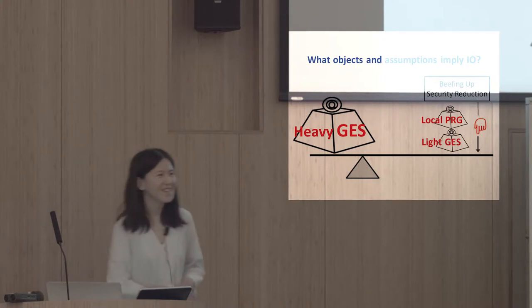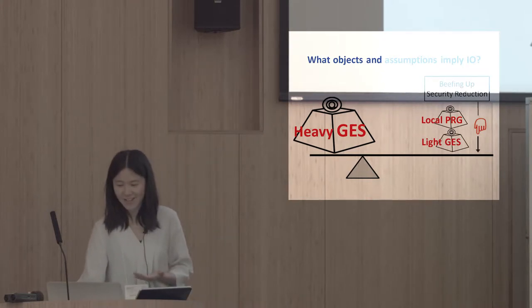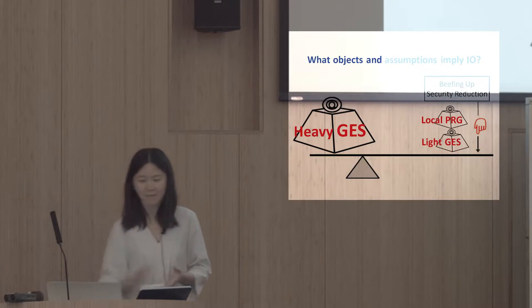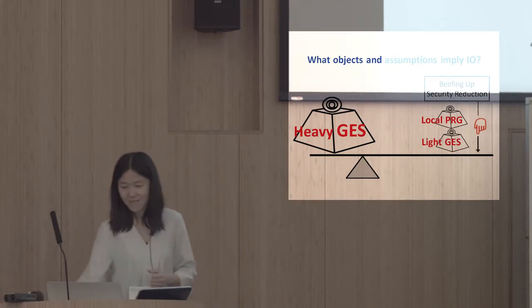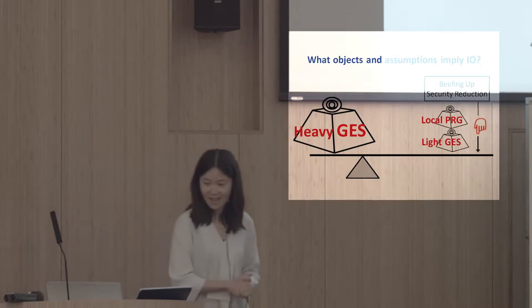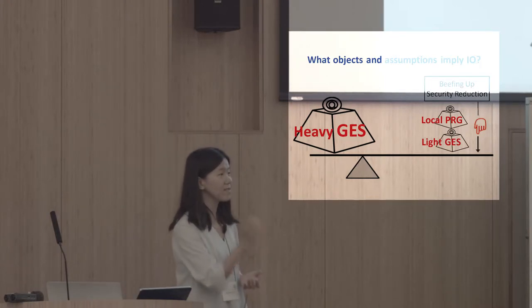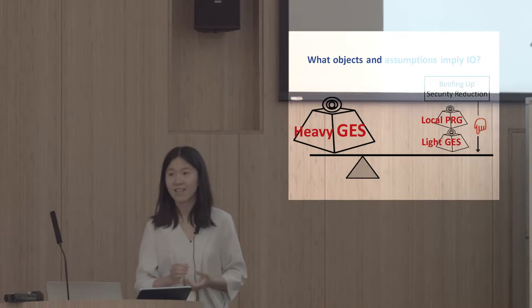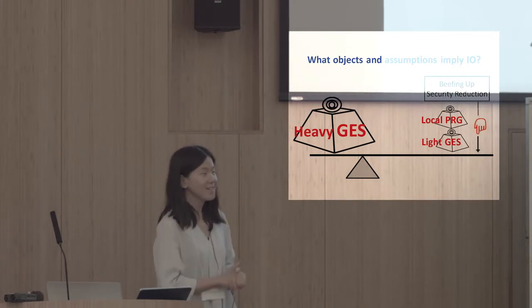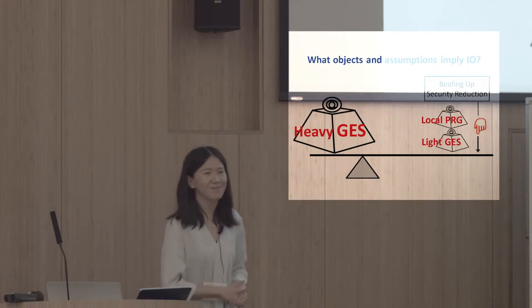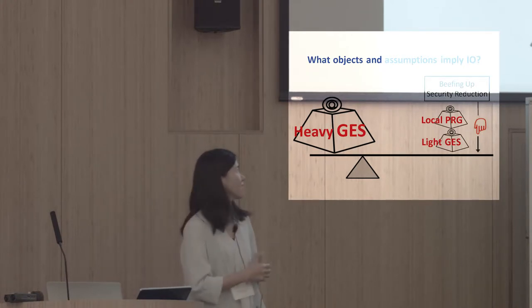But, no matter how heavy it is, as a wise man says: if you give me a point and a lever, we will be able to lift the earth. The idea is: can we lift up this heavy object by using some light one — in particular, a PRG with certain locality?